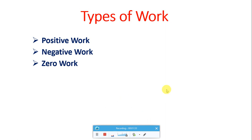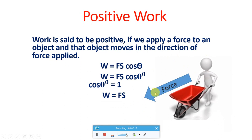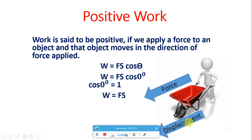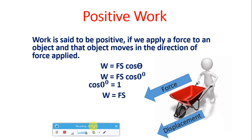Work is said to be positive if we apply a force to an object and that object moves in the direction of force applied. For example, this person is pushing a cart in one direction and the displacement is also in the direction of the force applied. In this case, the angle between force and displacement is zero degrees, so W equals F times S times cos 0° equals F times S.